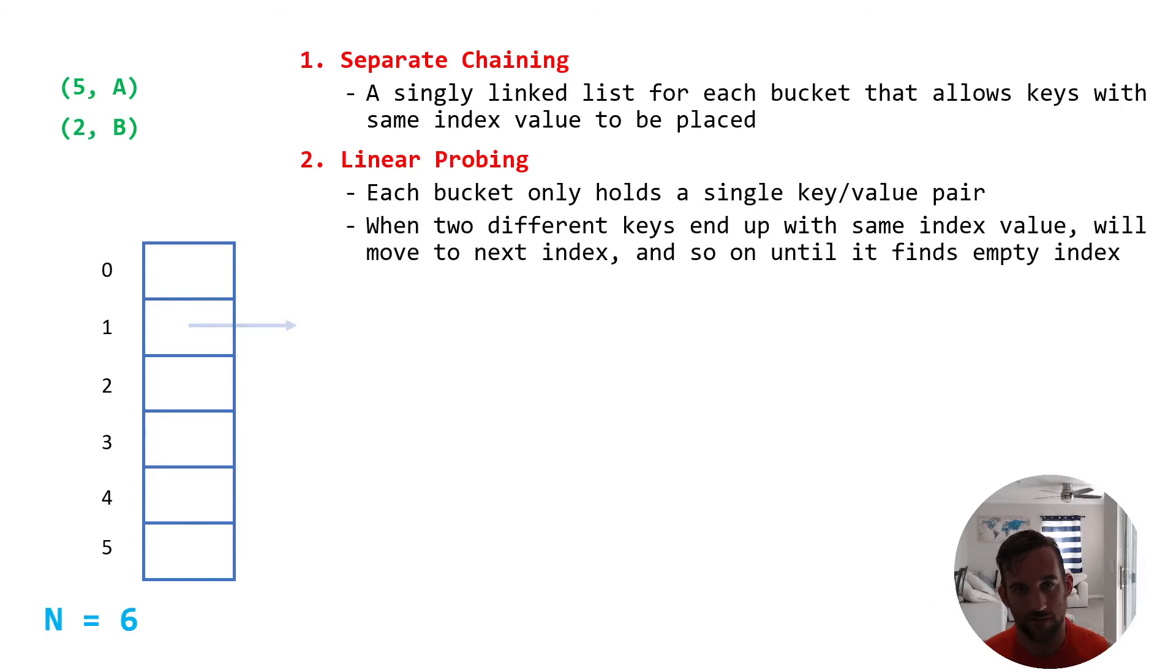So that's another one we're going to talk about. It's called linear probing. This is when each bucket only holds a single key value pair. So this doesn't even allow collisions. I mean, whenever we believe there's going to be a collision, it handles it right away and doesn't allow two key value pairs to occupy the same bucket.